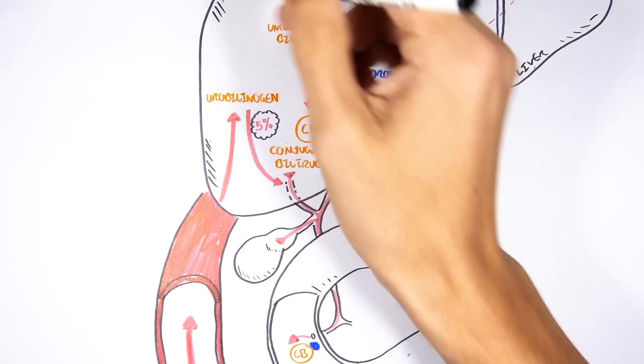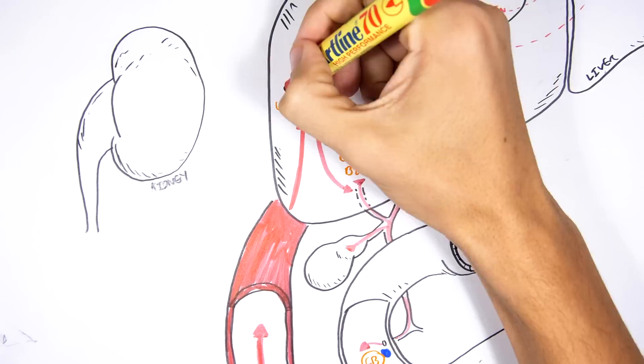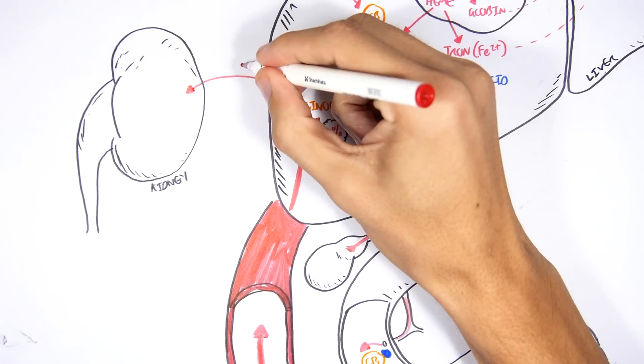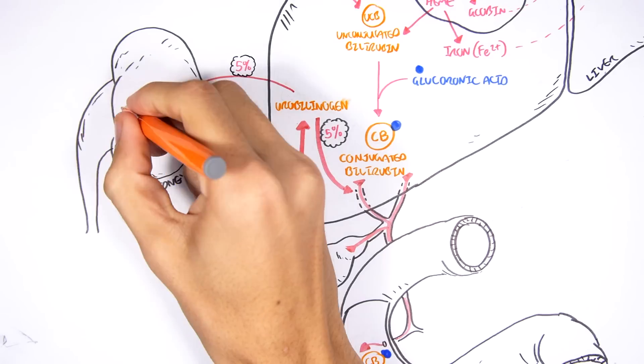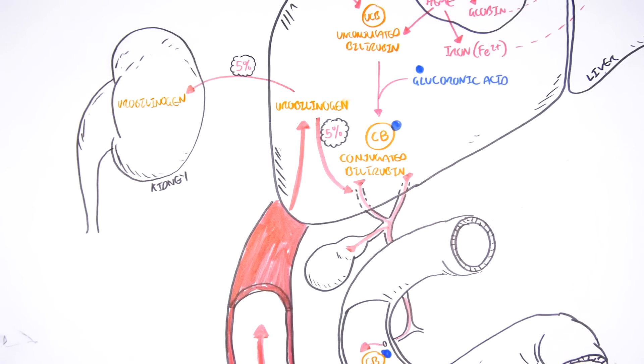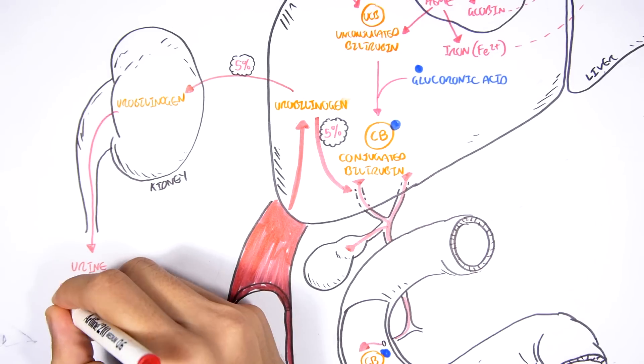The remaining 5%, the other 5% of urobilinogen, is transported by the blood to the kidneys, where it is converted to yellow urobilin and excreted, giving urine its characteristic yellow color.